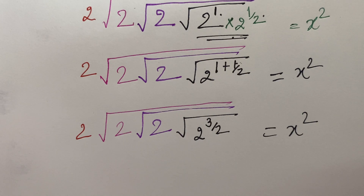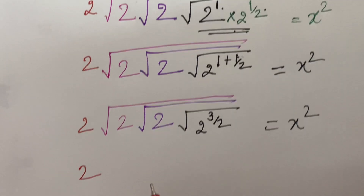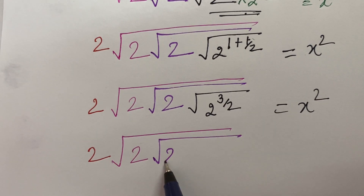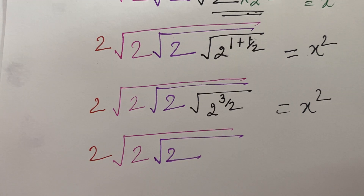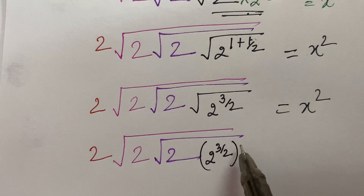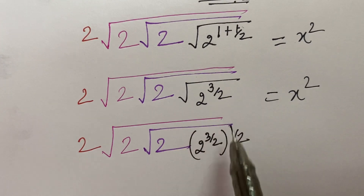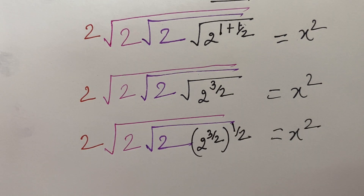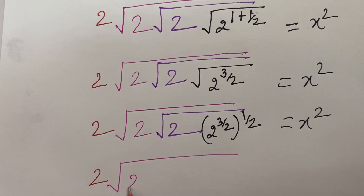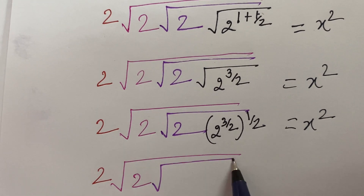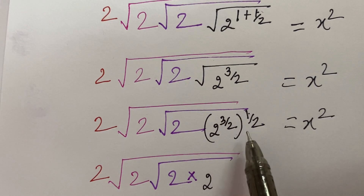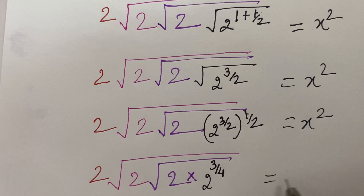The answer will come out to be 2, then square root of 2, another root 2. Now this root 2 is being removed. So this will become 2 raised to the power 3 upon 2 and the root sign means raise to the power 1 upon 2 is equal to x square. Again 2, then square root of 2, then square root of 2 multiplied by 2 raised to the power 3 — 1's are 3 and 2, 2's are 4 — so 3 upon 4 is equal to x square.